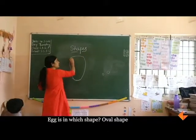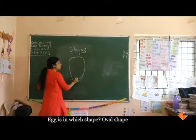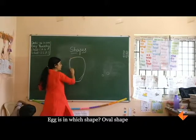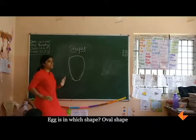So an egg is in which shape? Oval shape, oval shape.